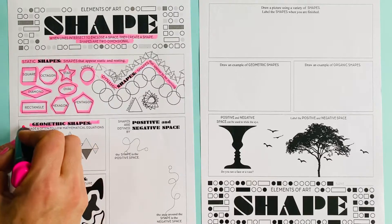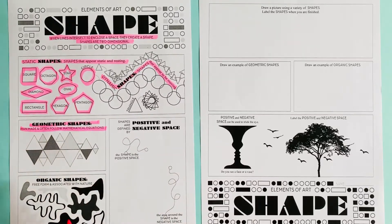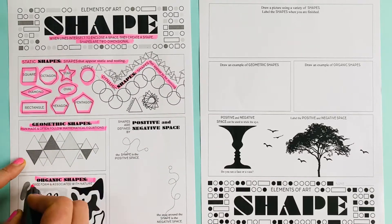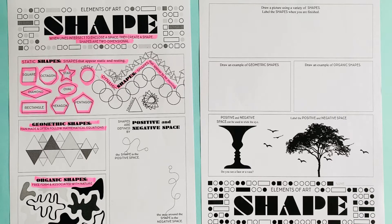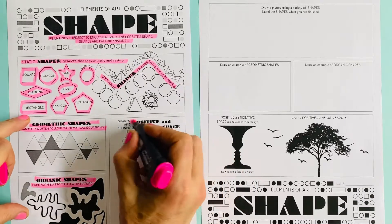Geometric shapes are man-made and often follow mathematical equations. Organic shapes are free-form shapes that we see in nature. Organic shapes are very popular elements of abstract art and are much more pleasing on the eye than geometric shapes. Geometric shapes are often found in things like surface pattern design or fabric design.